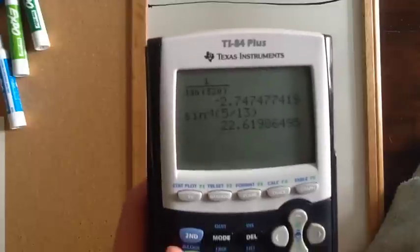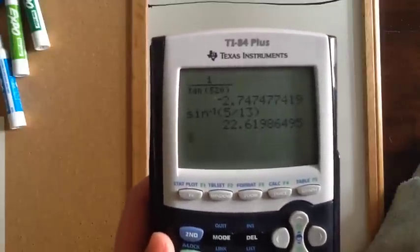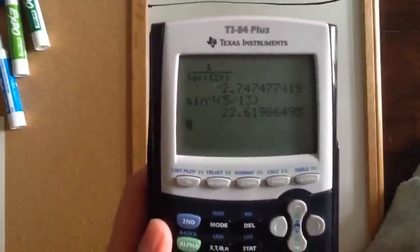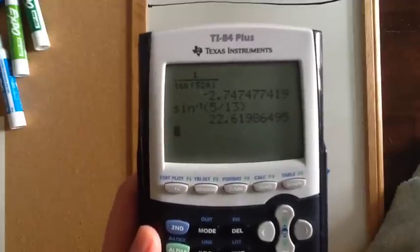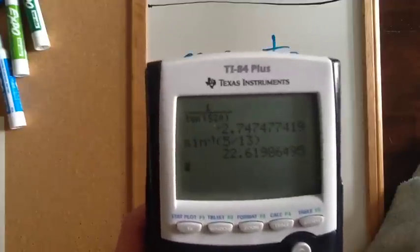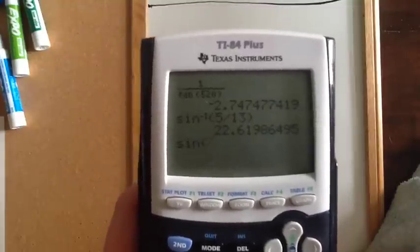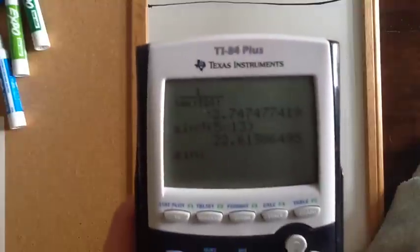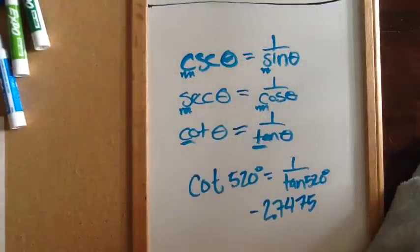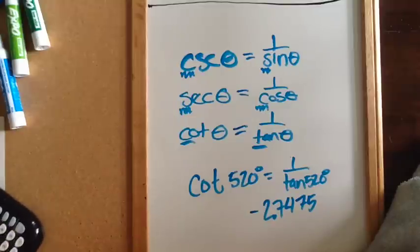So this we refer to as the inverse sine, and that finds the angle measurement. And then if we just use the normal sine, it will find the sine of any angle measurement. Those are the differences between those. That's how you find cosecant, secant, and cotangent on the calculator, and what the inverse sine or inverse cosine functions do on your calculator as well.